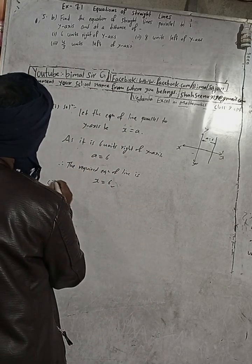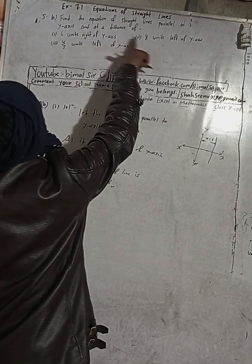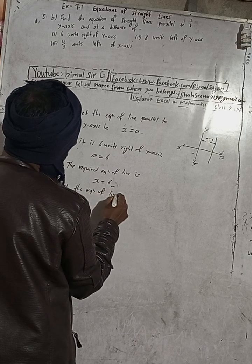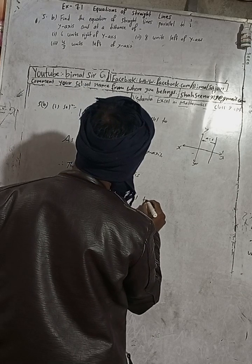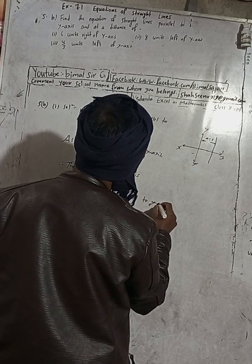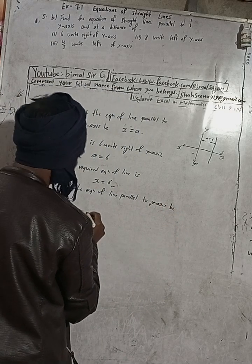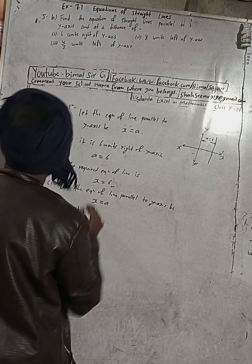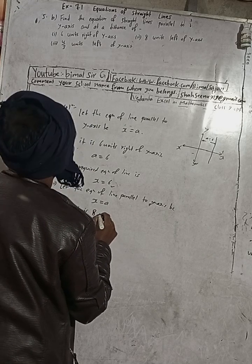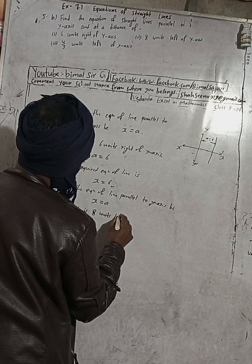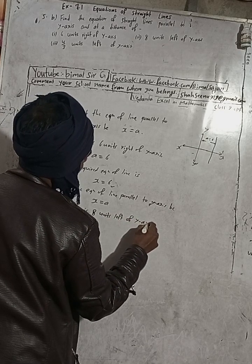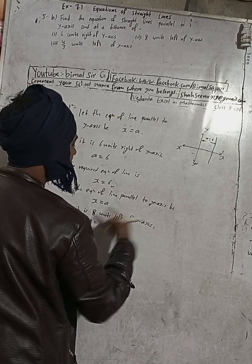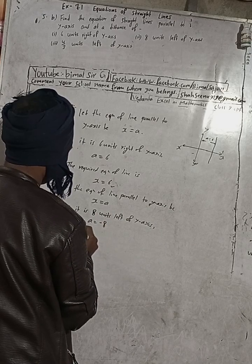Question number 2: find the equation of a line parallel to the y-axis and at a distance of 8 units left of the y-axis. Let the equation of the line parallel to the y-axis be x = a. As it is 8 units left of the y-axis, a is equal to minus 8, because right means plus and left means minus.